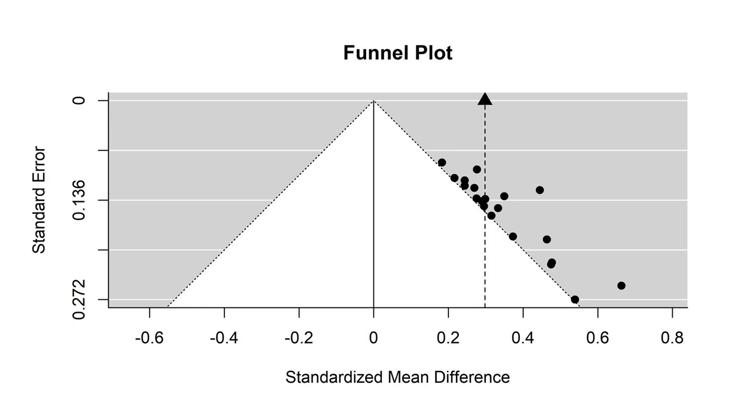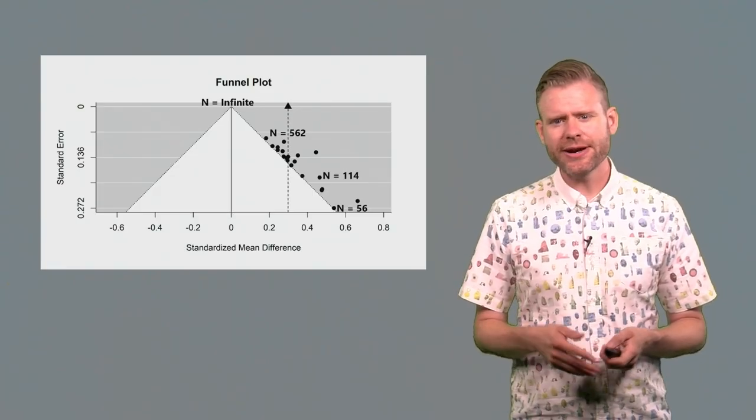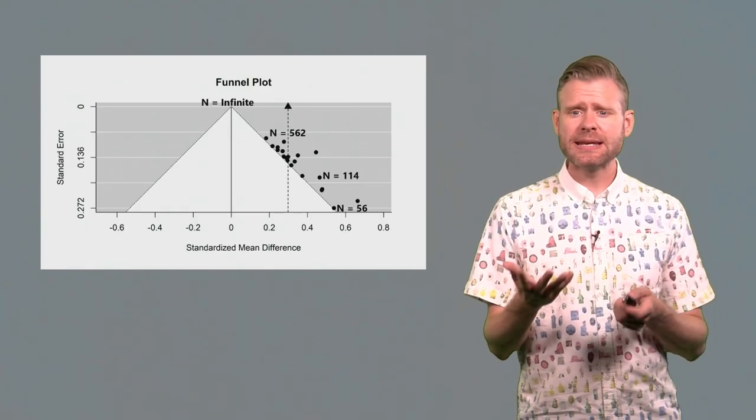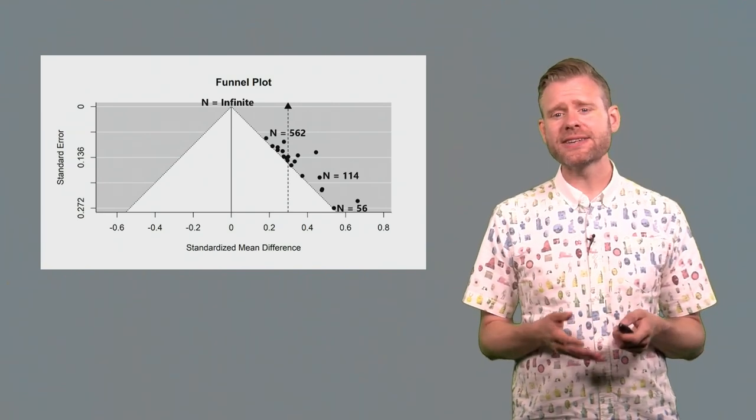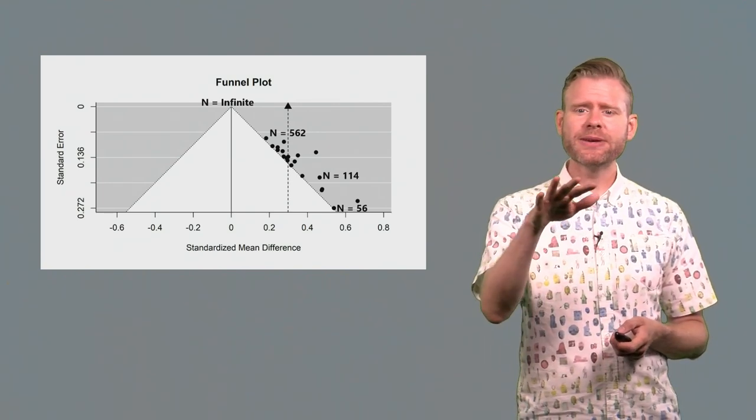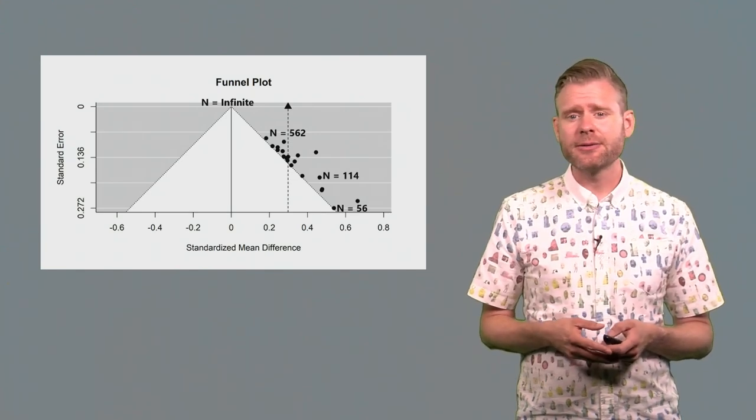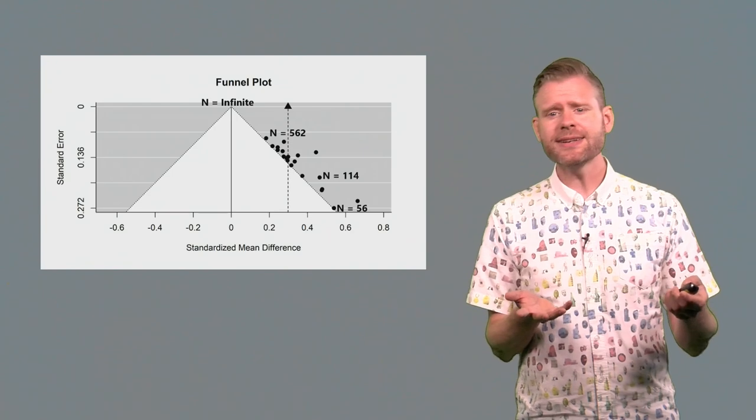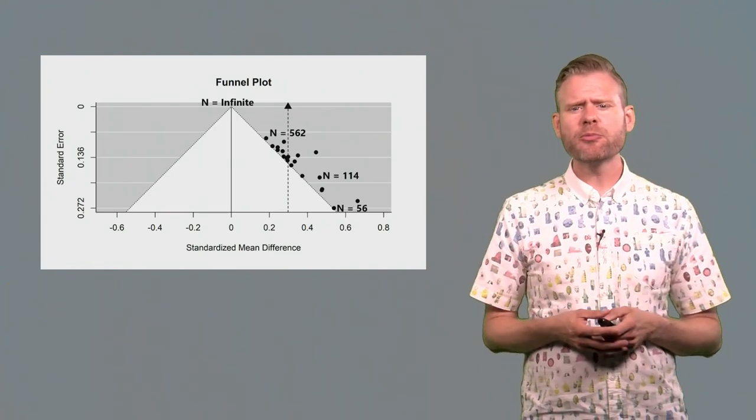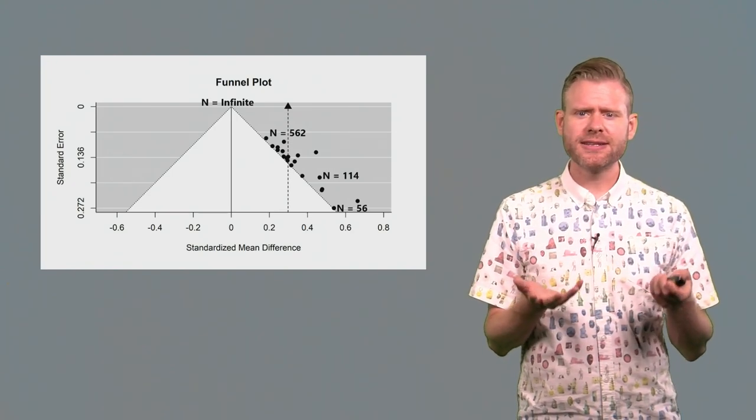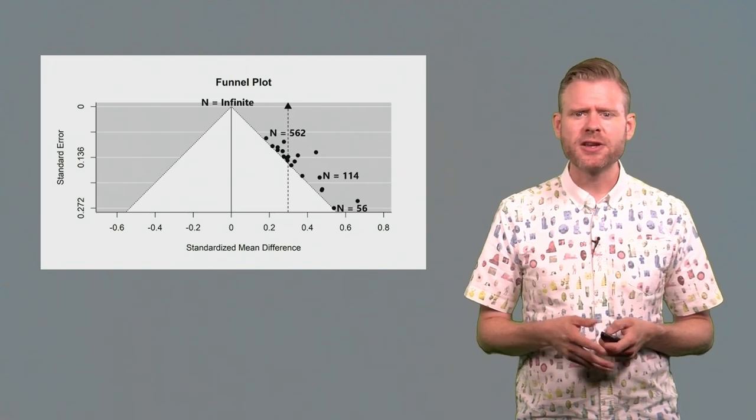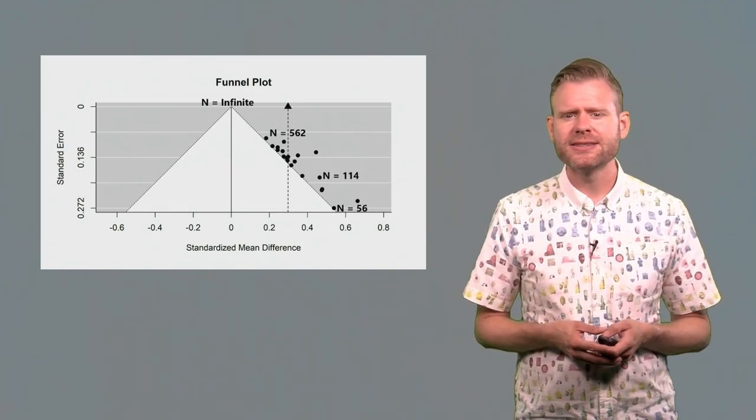That means that in this specific meta-analysis, there are some small studies with a sample size of only 56 observations, and those will be somewhere at the bottom of this graph. In the middle we find studies that had around 114 as a sample size, and at the top we find the largest studies that are included in the meta-analysis, with a sample size of 562.